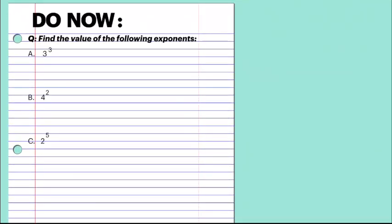Now you have a small exercise: find the value of the following exponents. Expand them in multiplication form and write the final value. Pause the video and attempt this. Let's come back. For the first exponent, 3 to the power 3 means 3 is multiplied by 3, 3 times: 3 into 3 into 3. 3 into 3 is 9, and 9 into 3 is 27. The final answer is 27.